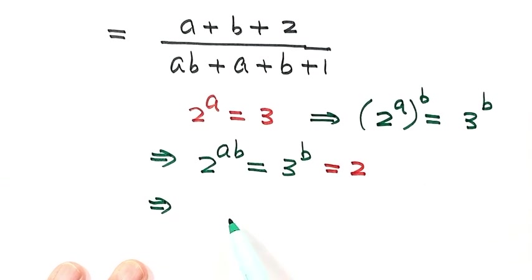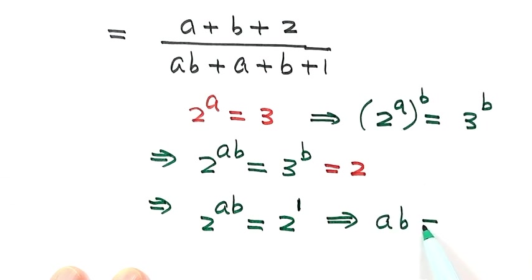Then here just 2 to the power of ab equals 2, which means to the power of 1. So when both sides have the same base, then the exponents must be equal. So then just a times b equals 1.